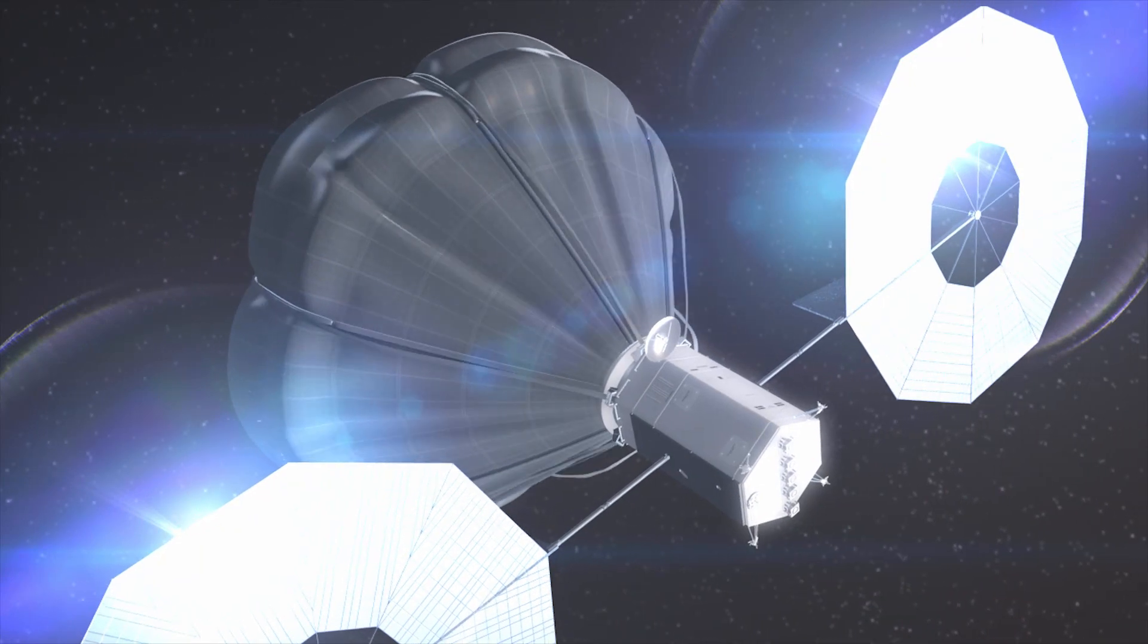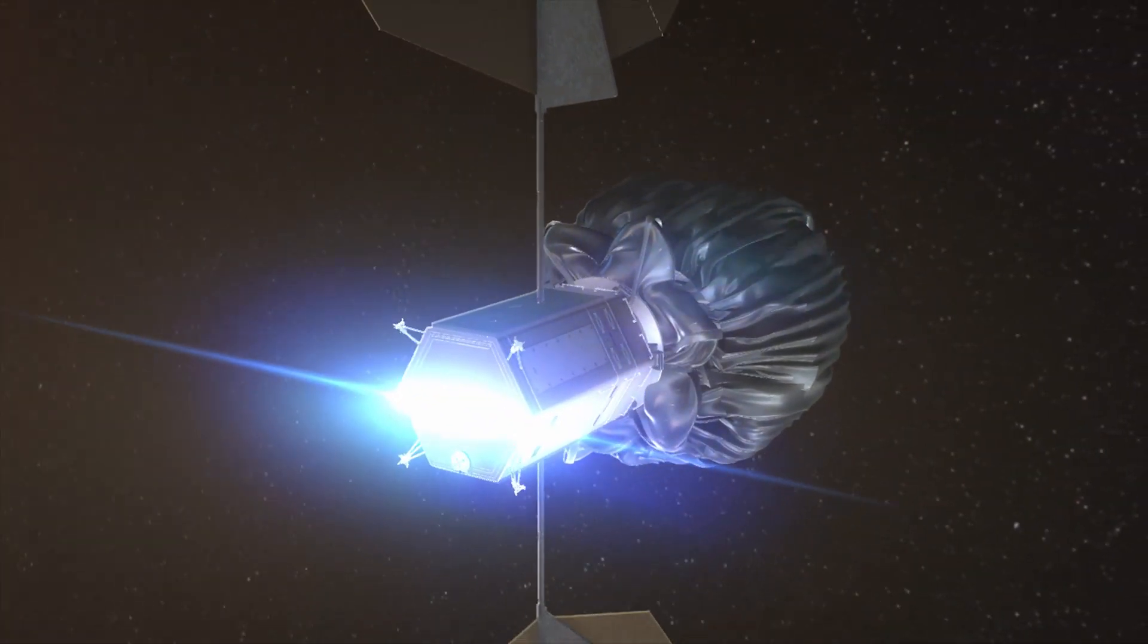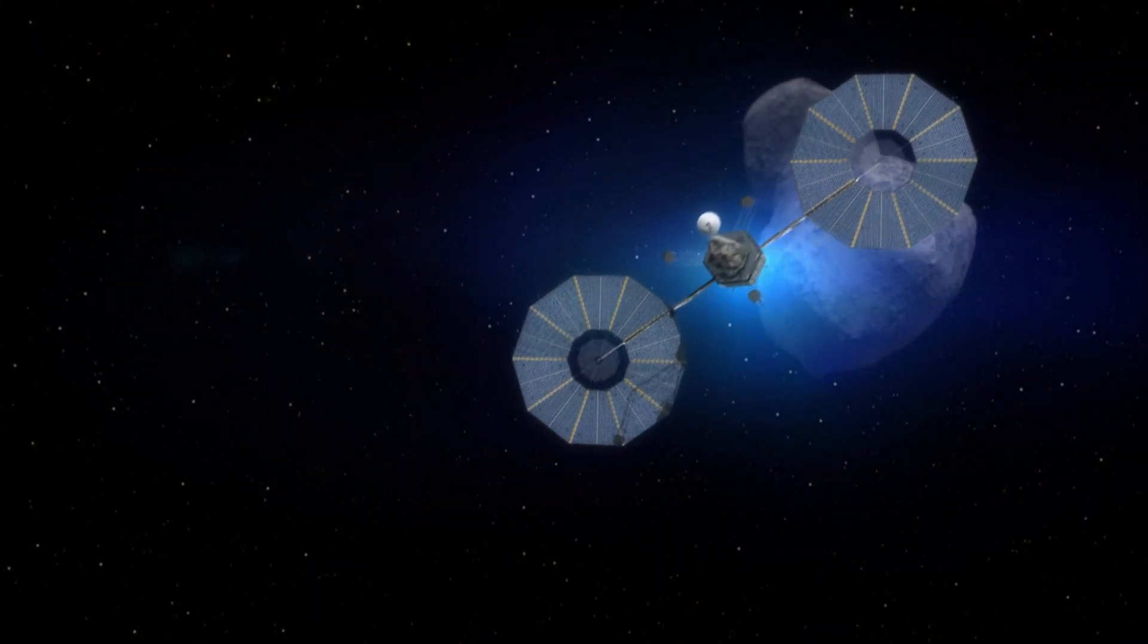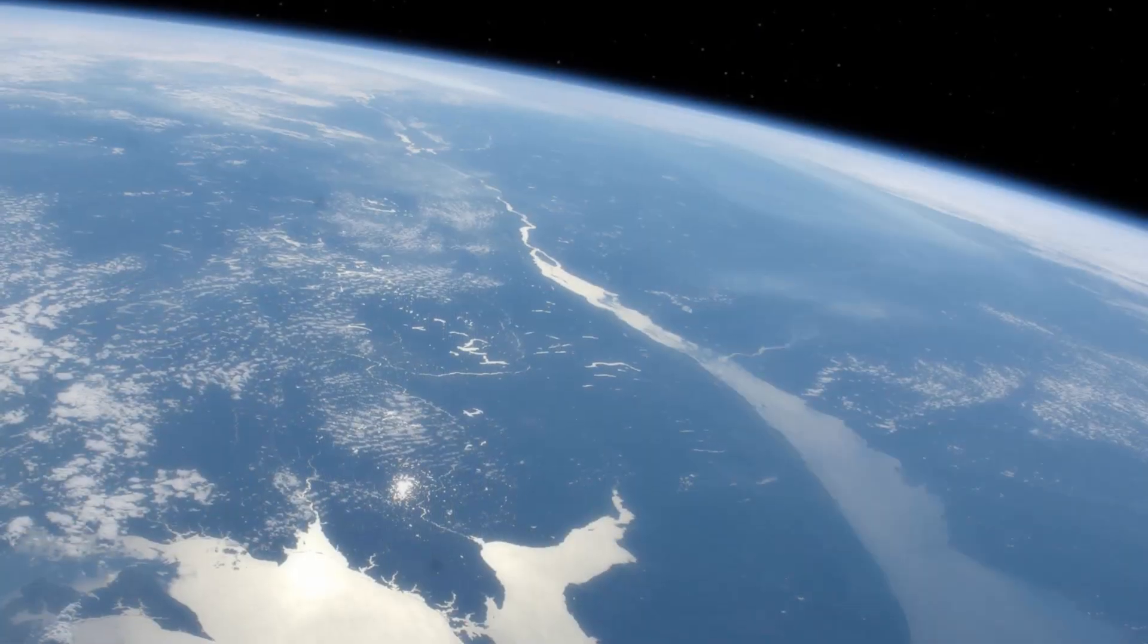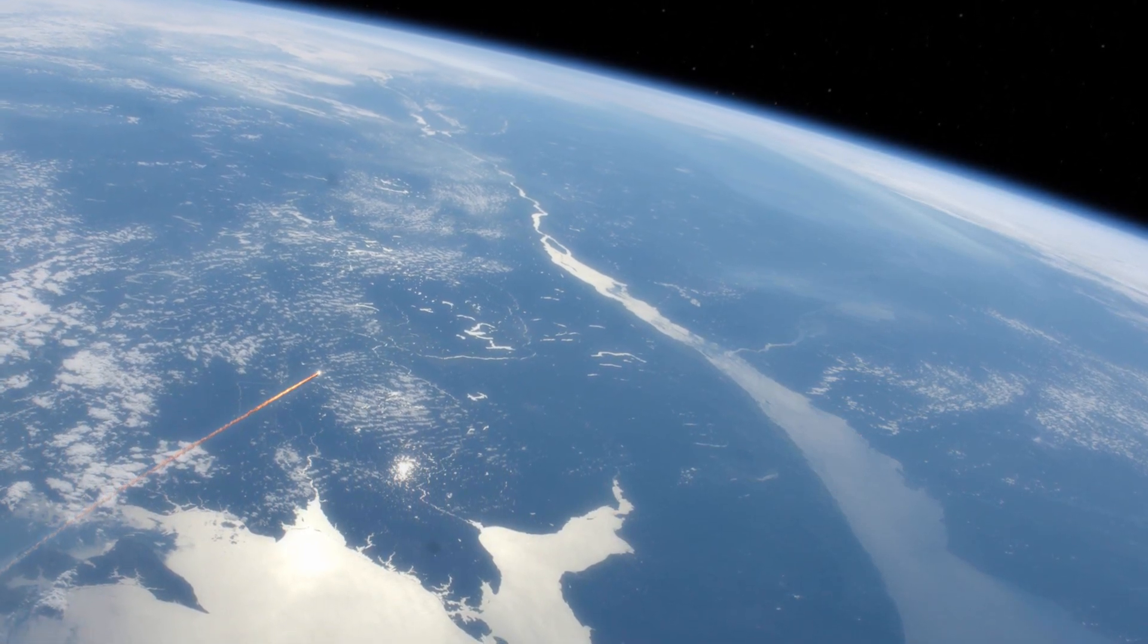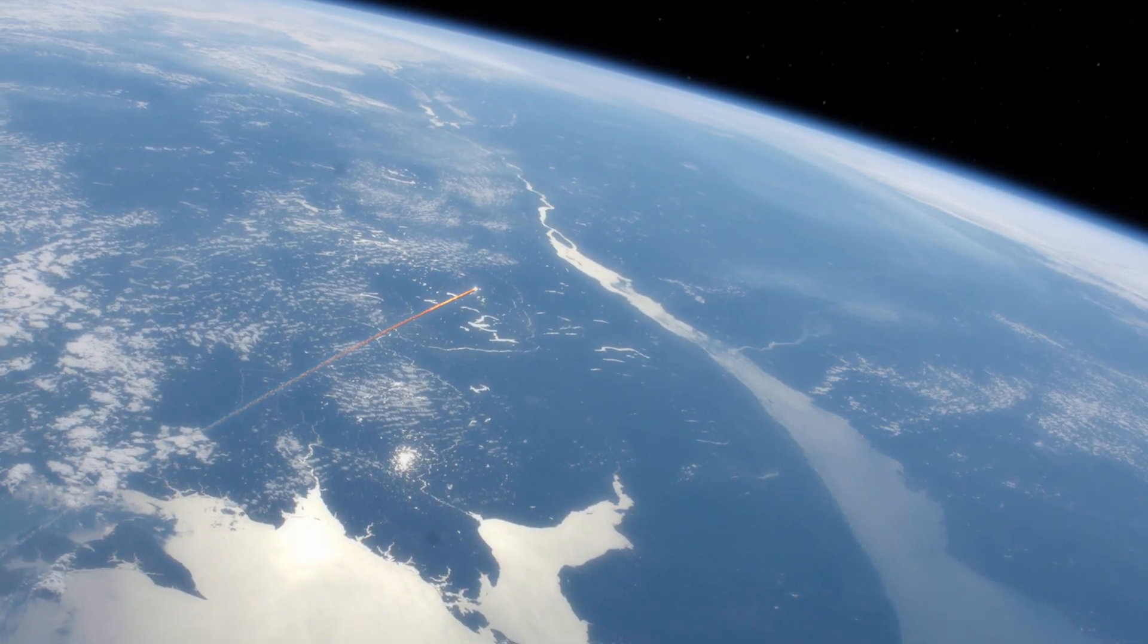After capturing an asteroid, the robotic spacecraft will move it to a stable orbit around the moon, where it could remain for hundreds of years. The asteroid will be so small that even if it did approach the Earth, it would burn up in the atmosphere and disintegrate before it could reach the surface.